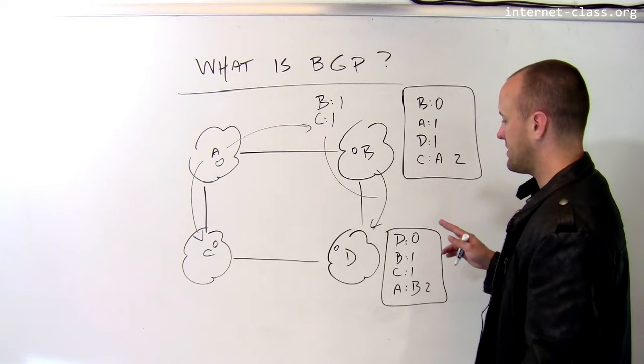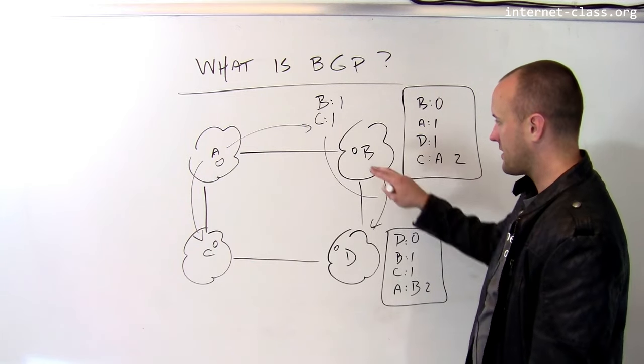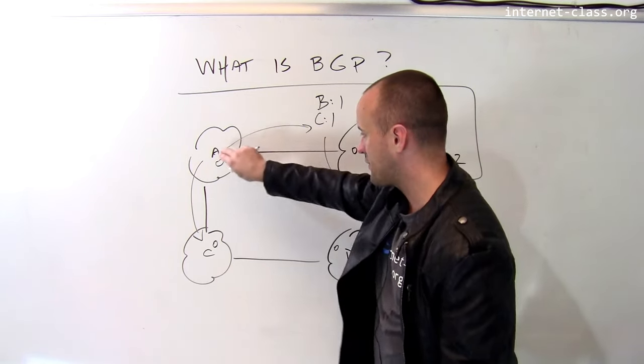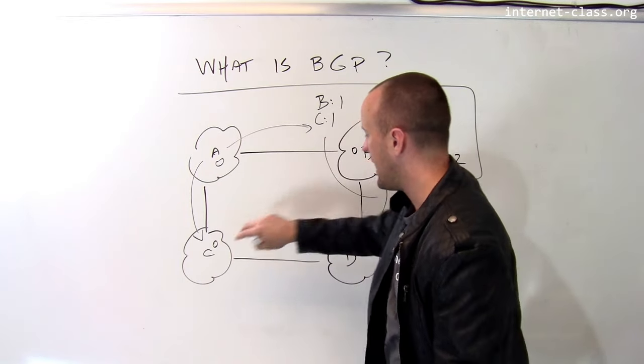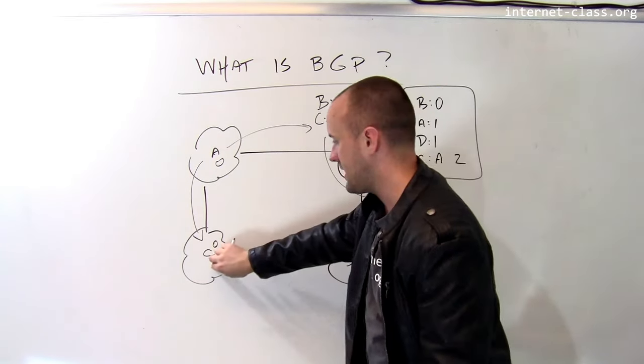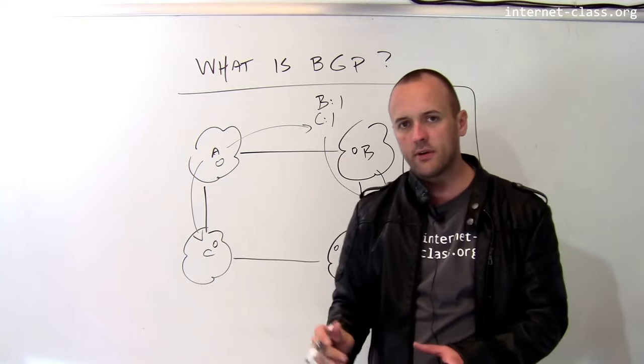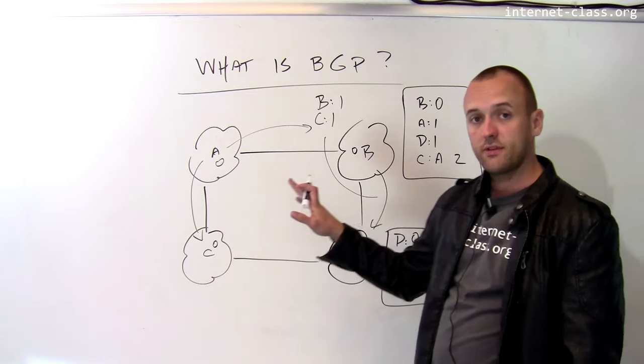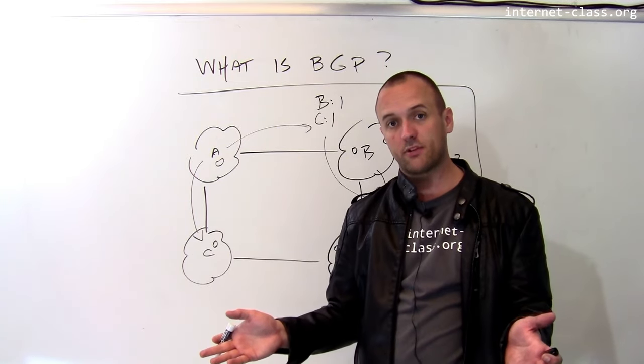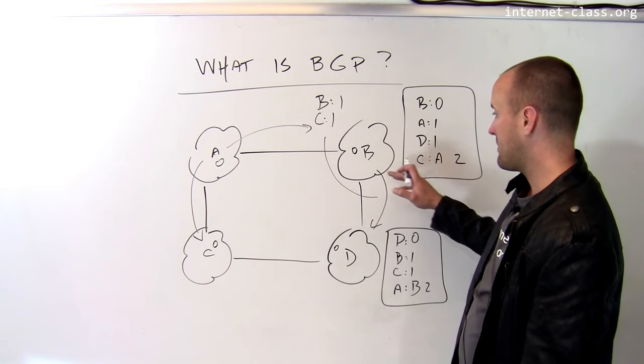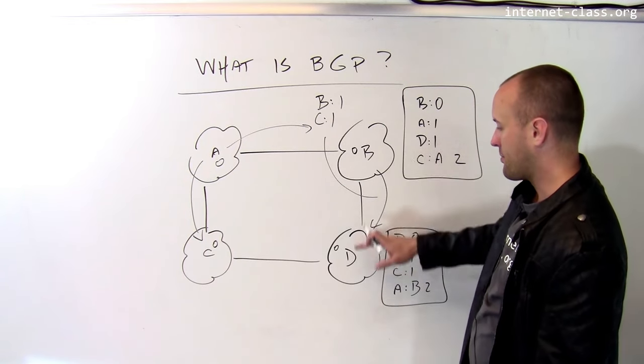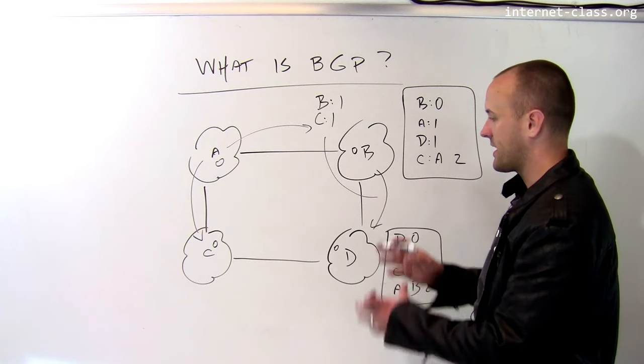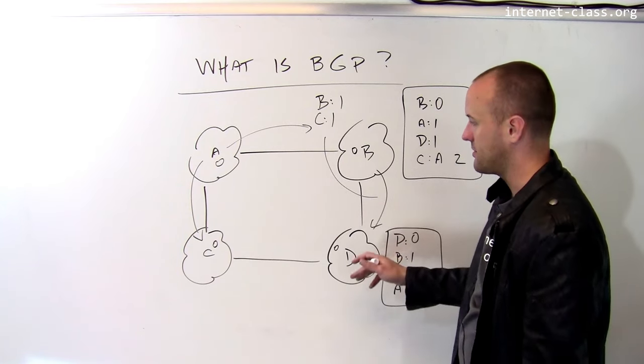Once all these routers have exchanged information, one interesting thing to notice is that B obviously has two routes to get packets to C. One is to send it through A. The second one is to send it through D. And choosing between those, B could choose to send packets in both directions depending on load. B could also might have some other way of breaking ties between these networks and might say, well I prefer to send things to network D because my connection is a bit faster or something like that, and so I'm going to do it this way.